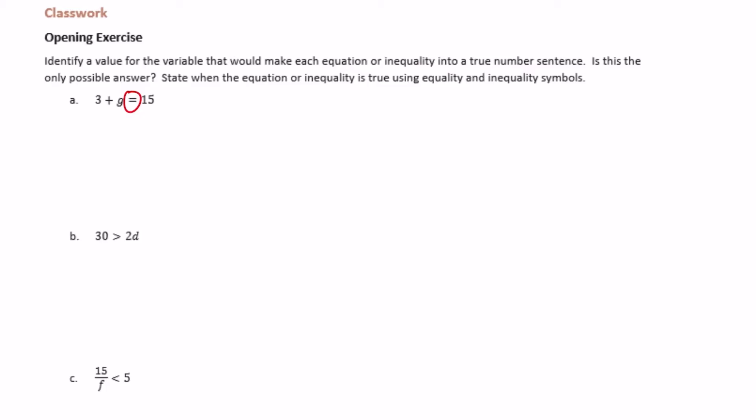So 3 plus what is equal to 15? What can we replace G with? 3 plus 12 is equal to 15, and 12 is the only option. So G must equal 12. There is no other choice. 12 is the only value that will make this true.